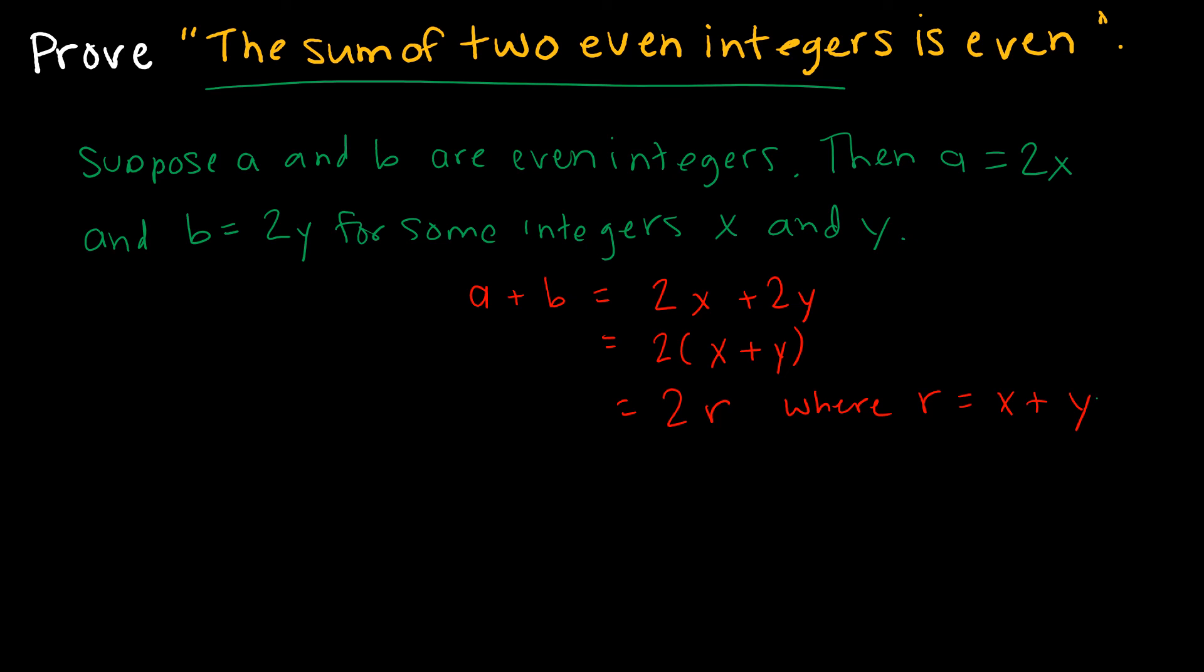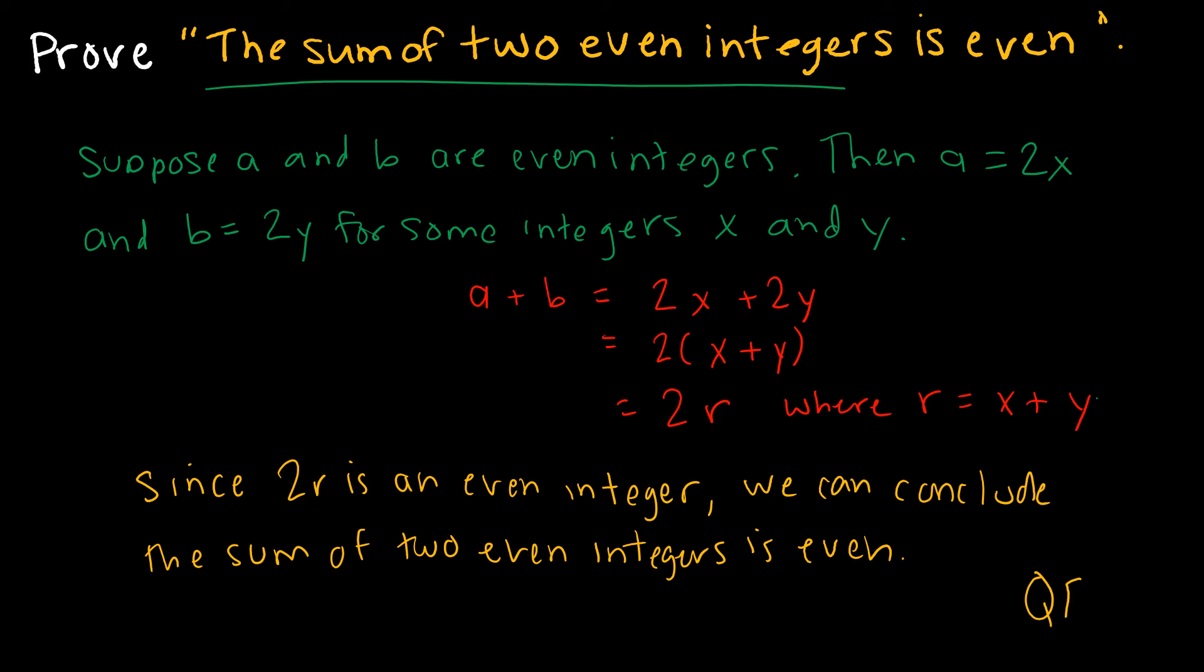And then, of course, I can say since 2R is an even integer, we can conclude the sum of two even integers is even. Now, I didn't have to re-express everything there at the bottom, but not a bad idea, just so that you're right in your own head and know that, yes, what you have done is prove that the sum of two even integers is even.